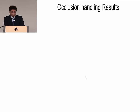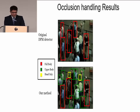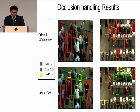Looking at the occlusion handling results: the original DPM detector has many missed detections. Our method can detect more people by detecting the upper body, shown in green, and the head, shown in yellow. Here is one more example — the original DPM detector misses many persons, but our method can detect much more people.